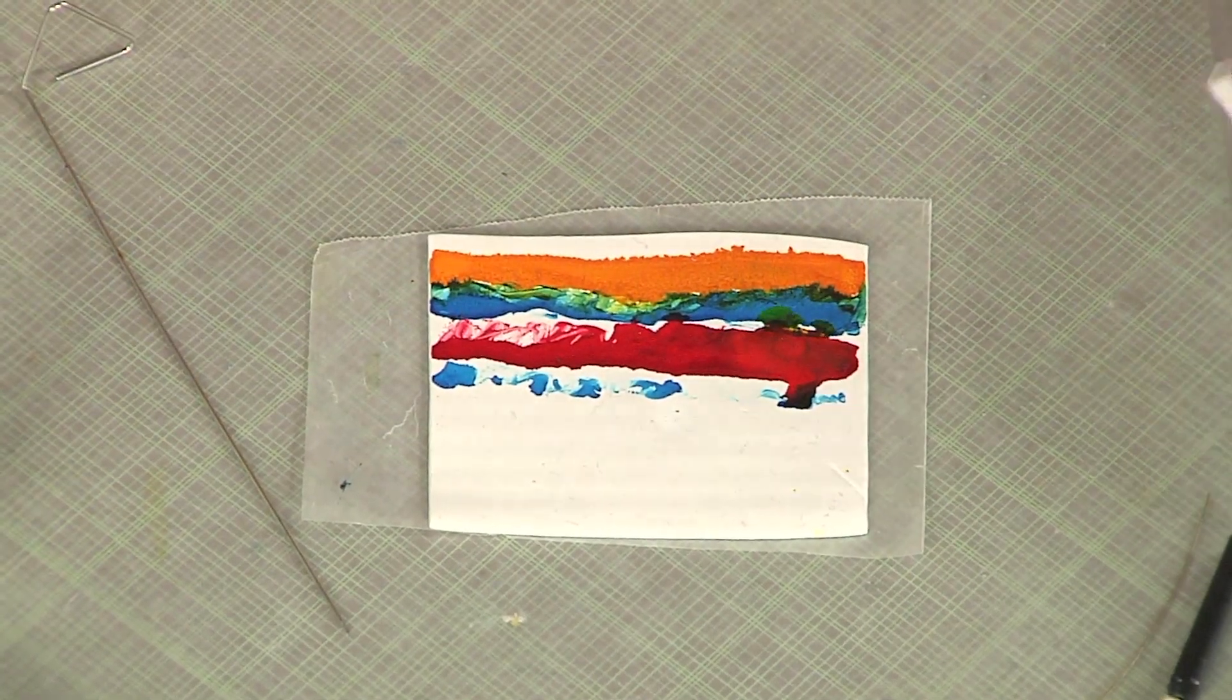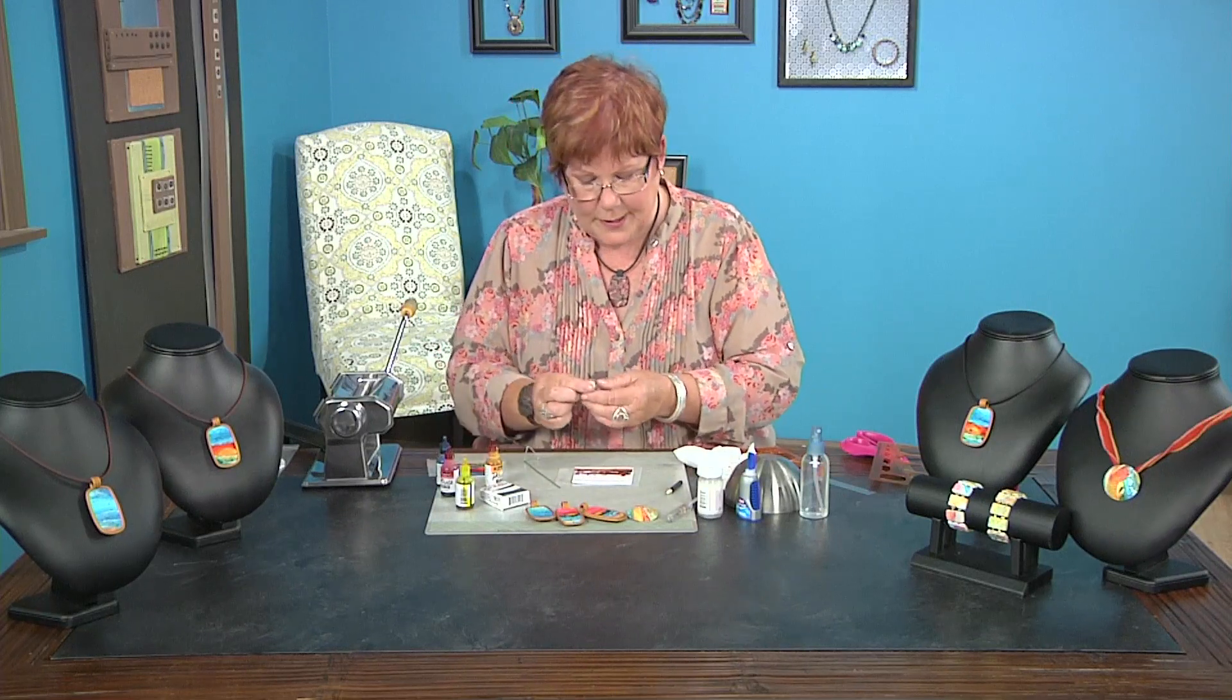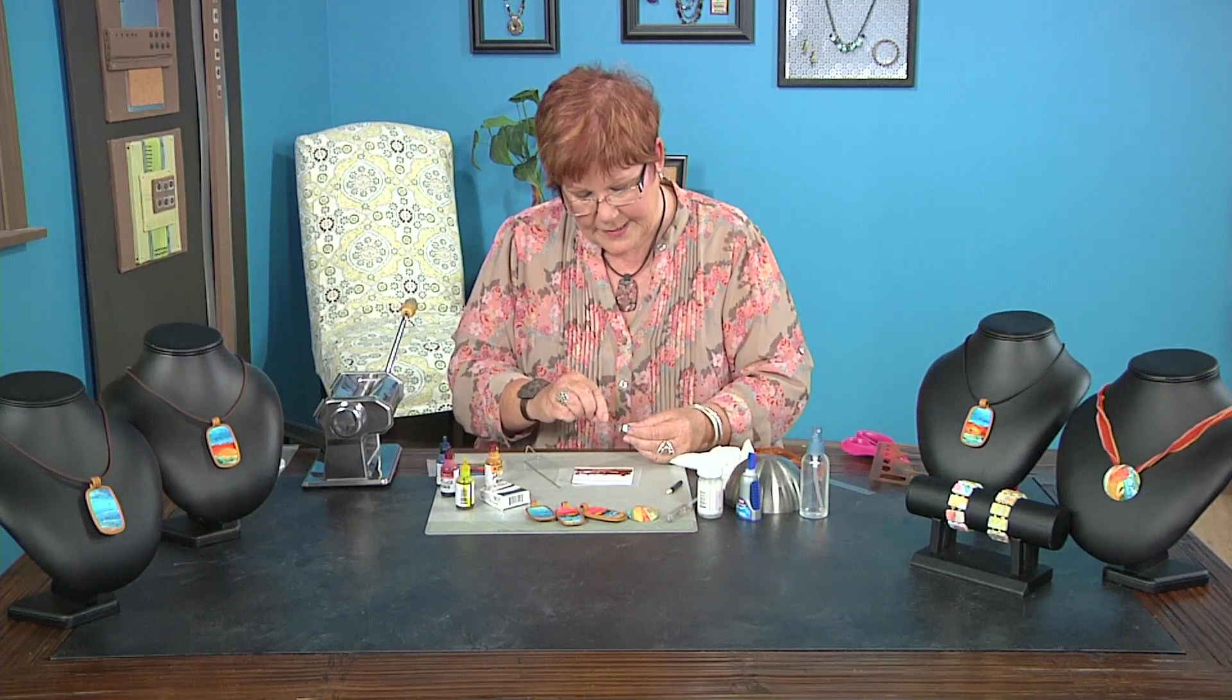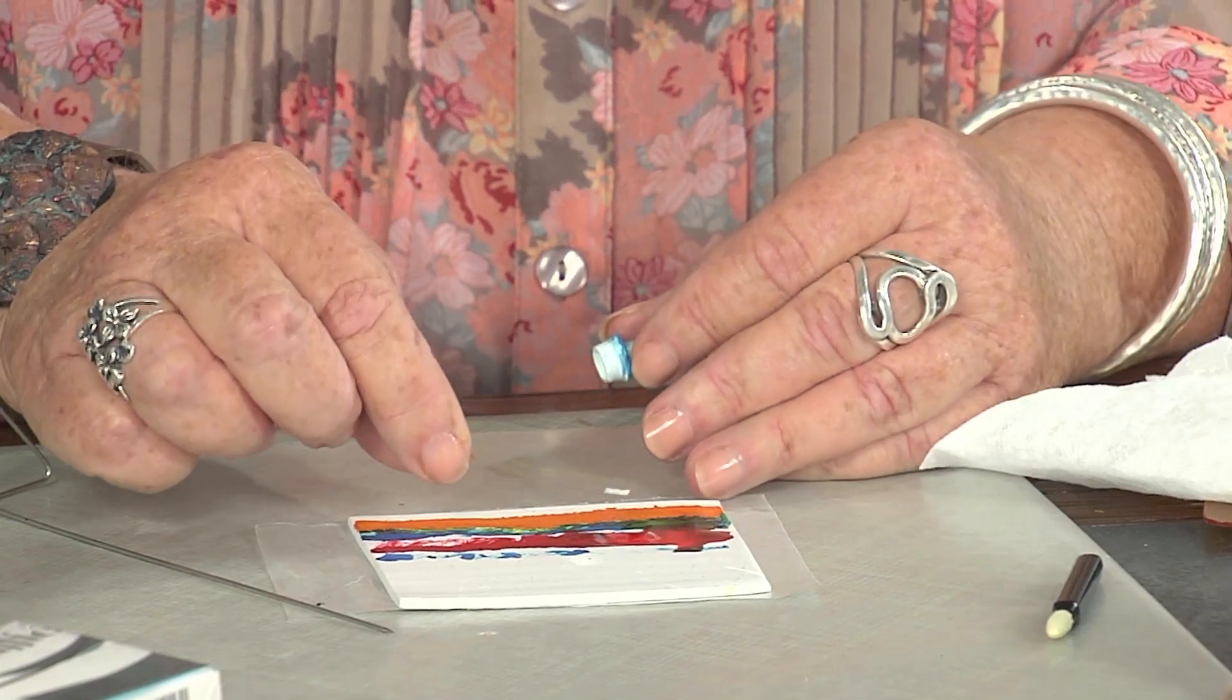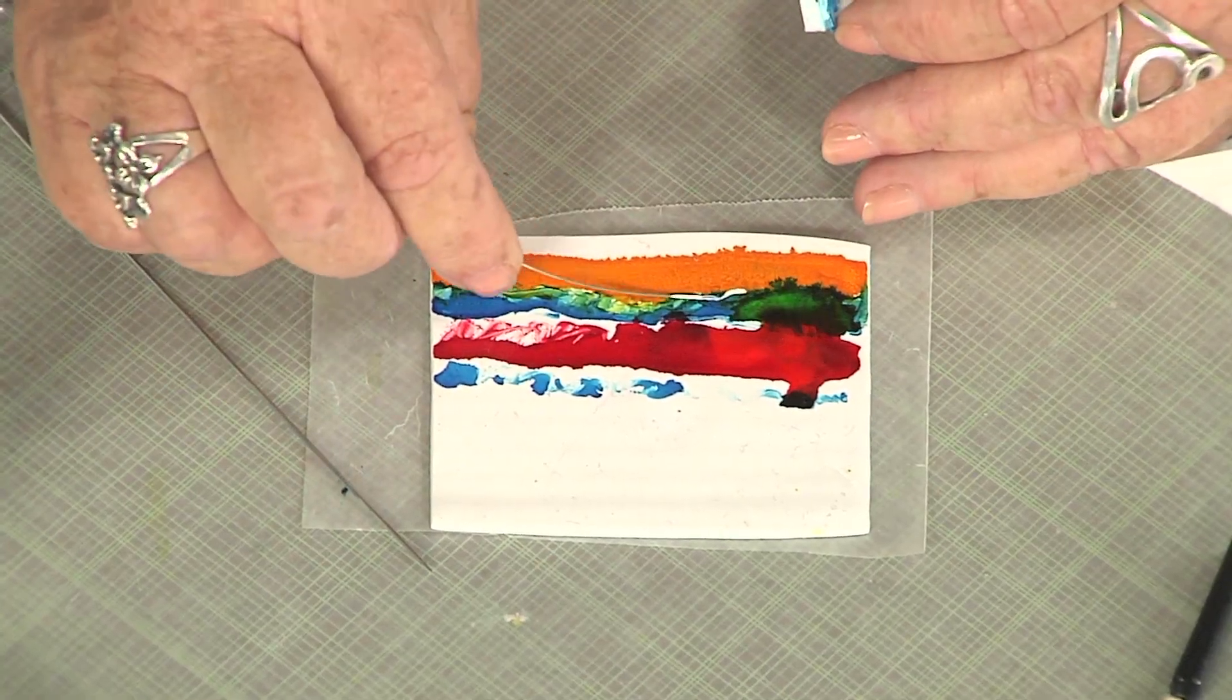Now here's the interesting part. I need to add some white. And truly this came out of laziness because I didn't want to get up from my table. This is a piece of stringing wire. And I'm going to put my white on there to add the white caps to my piece here.